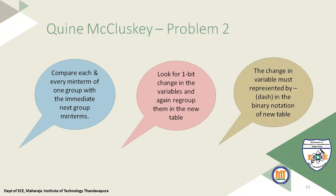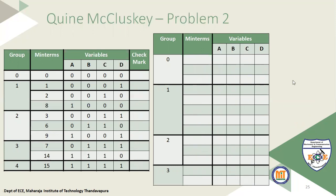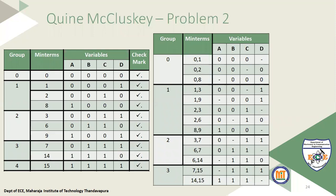If there is a one-bit change in a variable, that changing variable must be represented by a dash symbol in the new table. While writing the binary notation in the new table, the bit that was changing is replaced by a dash symbol. The common values from the remaining variables are carried over as they are.